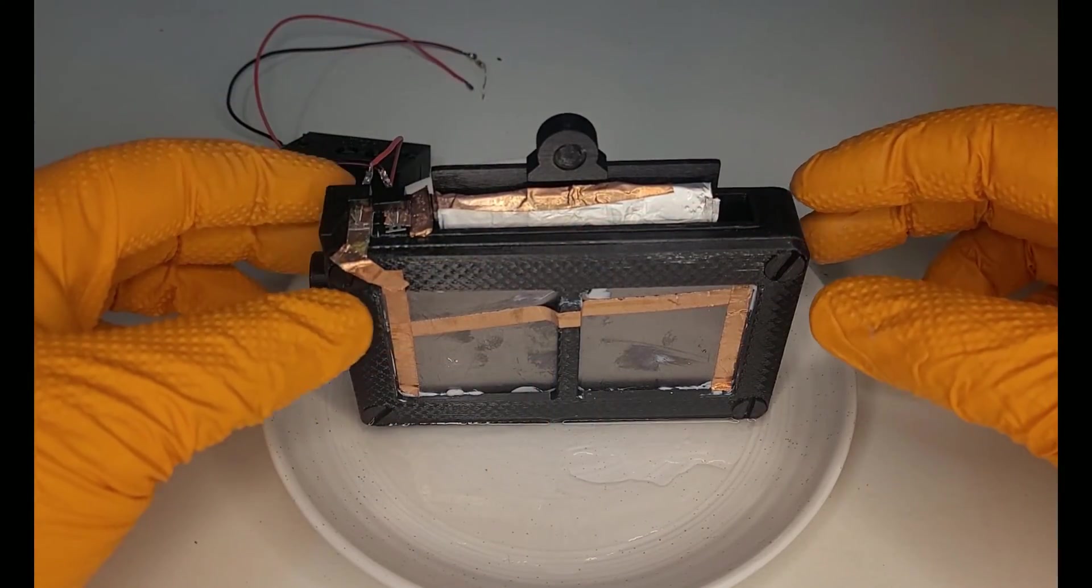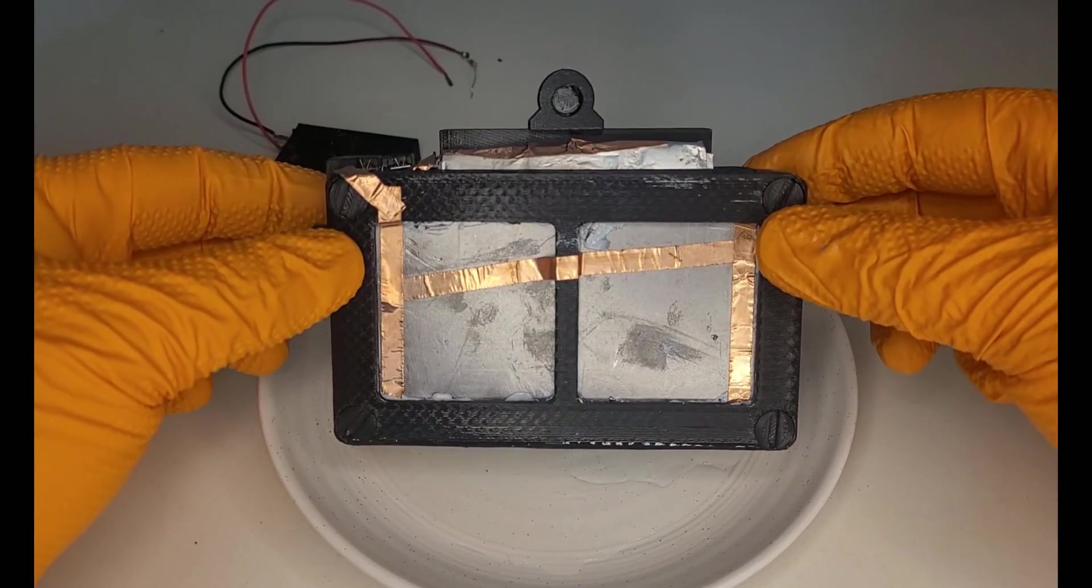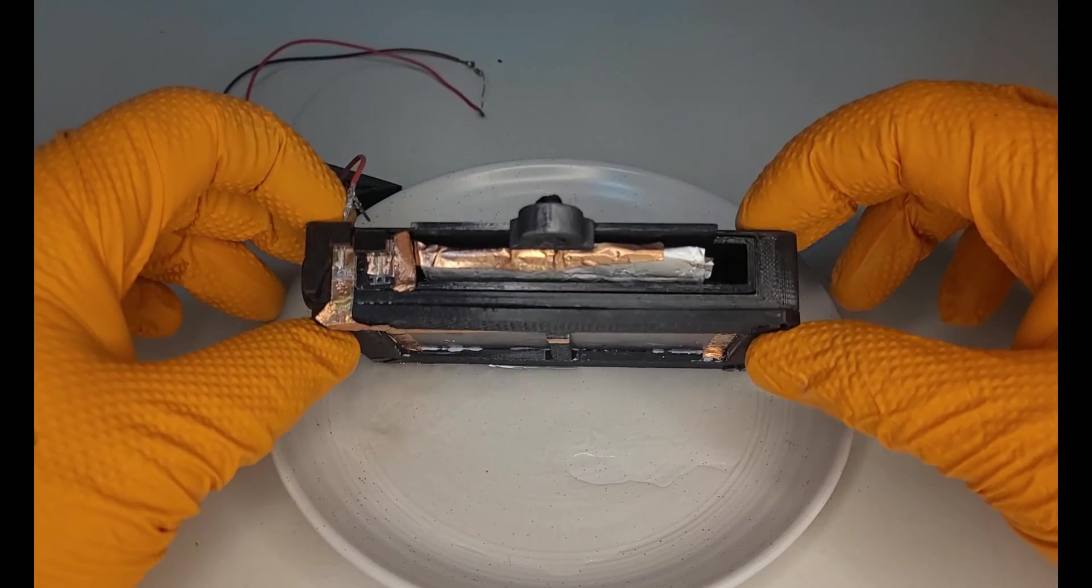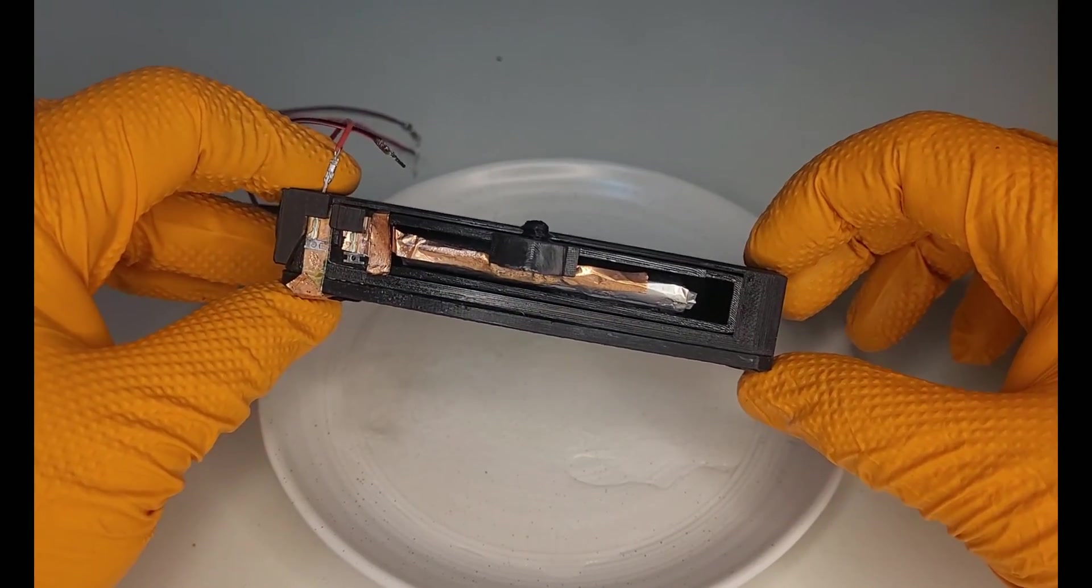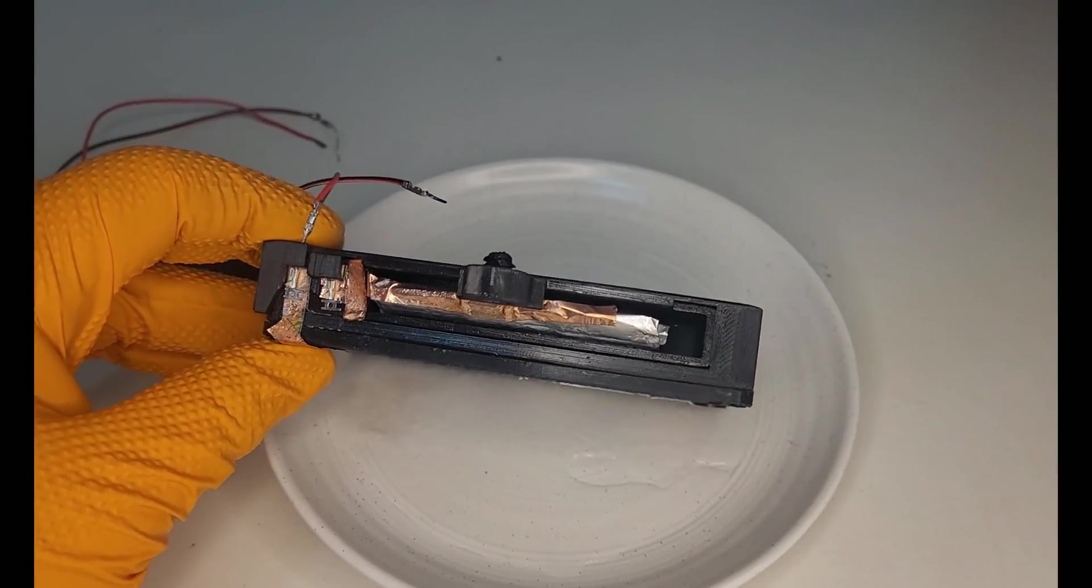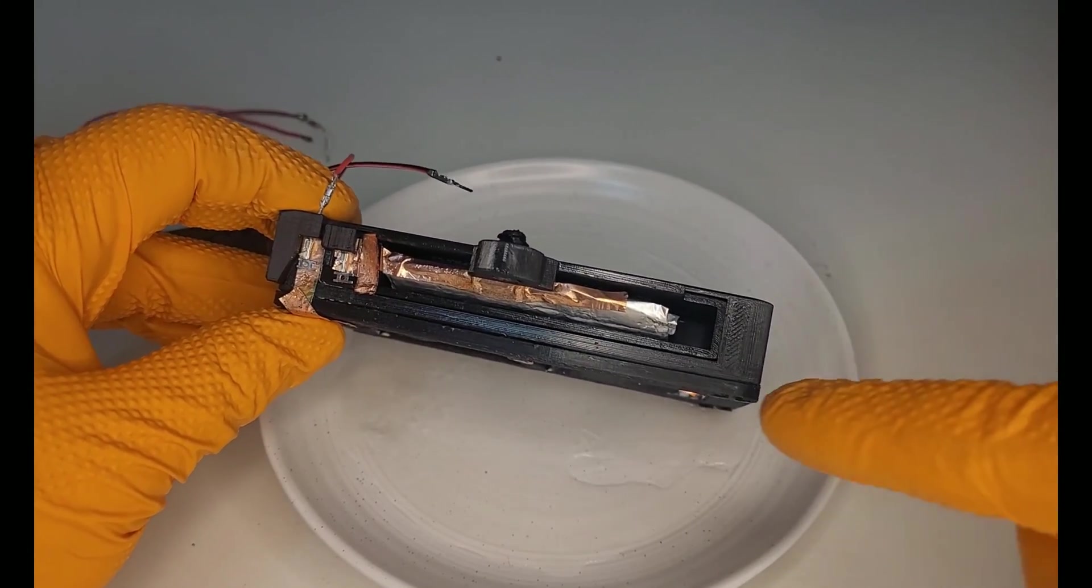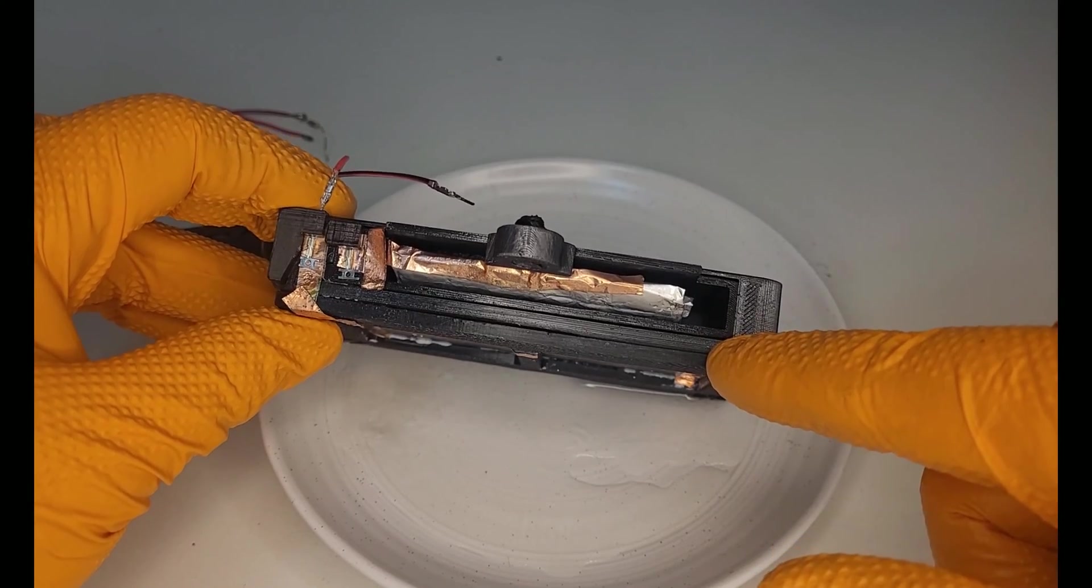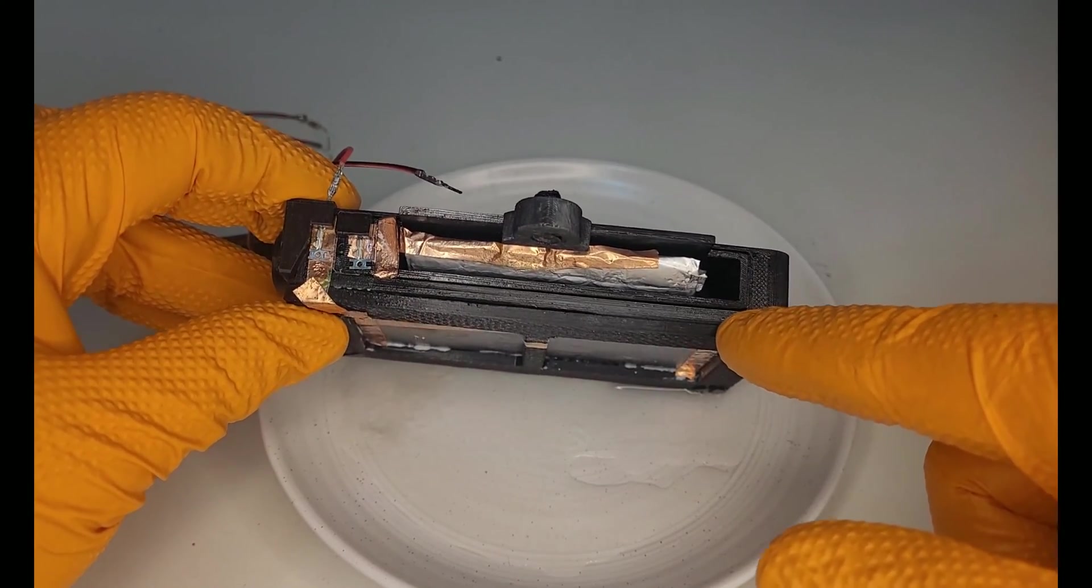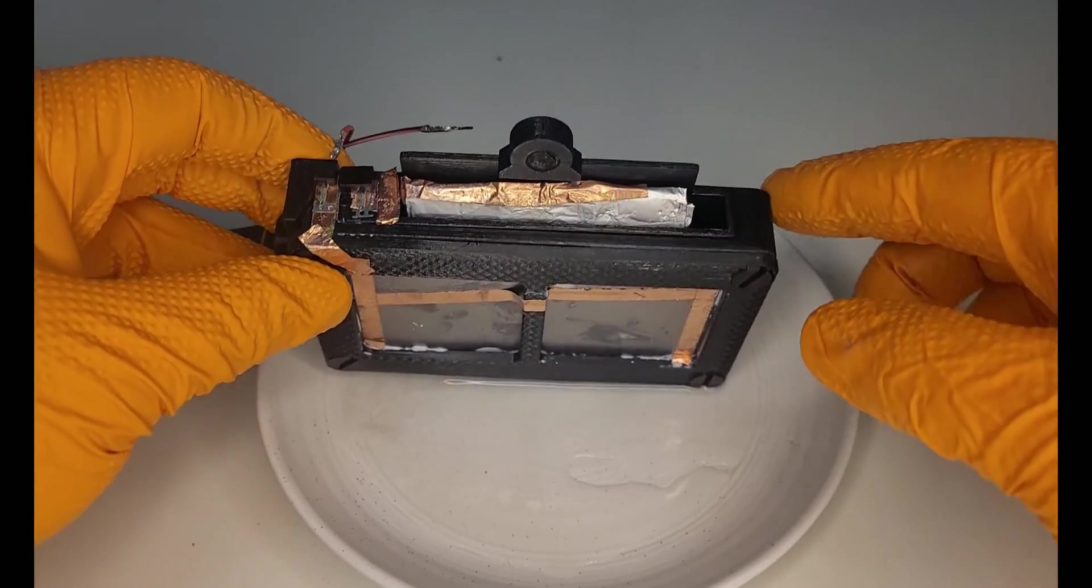I attempted to test the longevity of the cell, but was somewhat unsuccessful. I left the battery overnight with a 1 kilohm load. When I checked it the next day, I had a bit of a surprise. My cell had sprung a leak, and the copper tape had become disconnected. It didn't discharge all night, but I'd say at least it was for a couple hours.